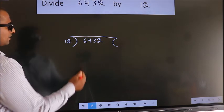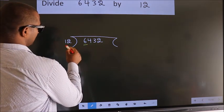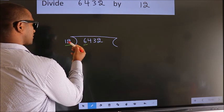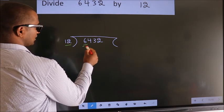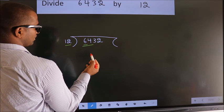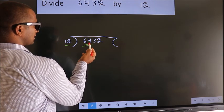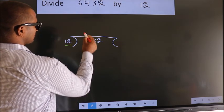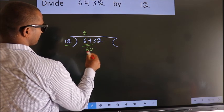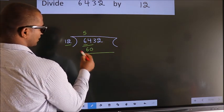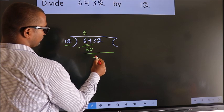Next, here we have 6, here 12. 6 is smaller than 12, so we should take two numbers: 64. A number close to 64 in the 12 table is 12 fives, 60. Now we should subtract. We get 4.